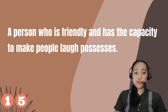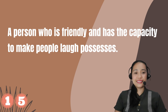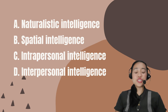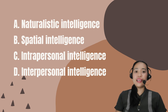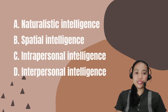Number 15. A person who is friendly and has the capacity to make people feel loved possesses: A. Naturalistic intelligence. B. Spatial intelligence. C. Intrapersonal intelligence. D. Interpersonal intelligence.